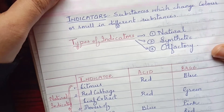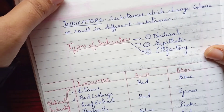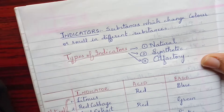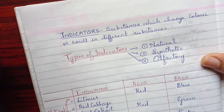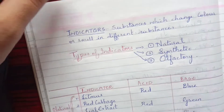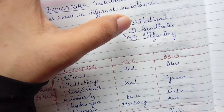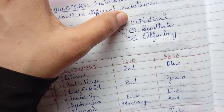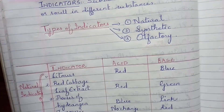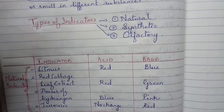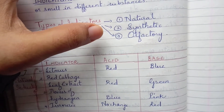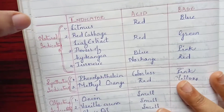Next is an important part: indicators, which are not covered well in the textbook but may be asked in questions. Indicators are substances which change their color or smell when added to different substances based on whether they are acid or base. There are three types: natural, synthetic, and olfactory.